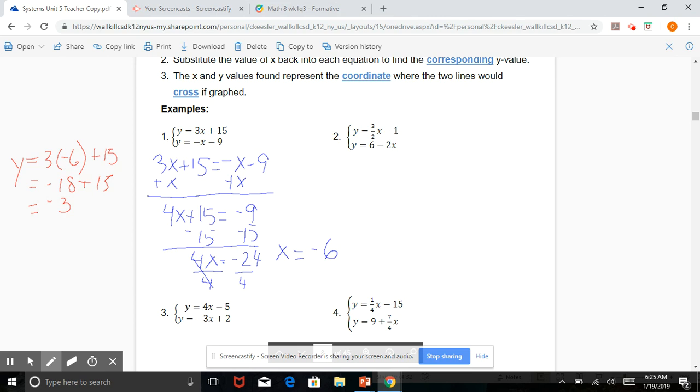I'm going to do the same for the second equation, just to double check. So we have y equals negative 6, be really careful with that double negative, minus 9. Negative negative 6 is like doing negative 1 times negative 6, which becomes positive 6 minus 9. And 6 minus 9 is also negative 3. So that's giving me my solution of negative 6, negative 3.